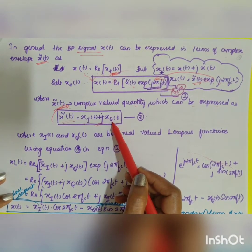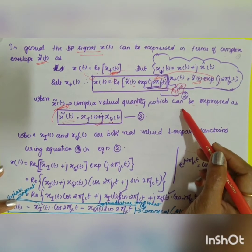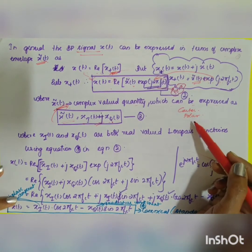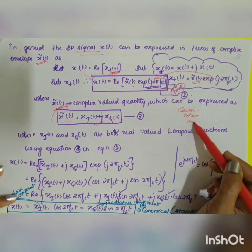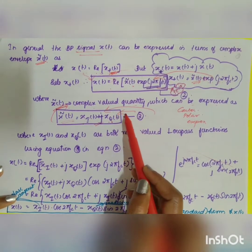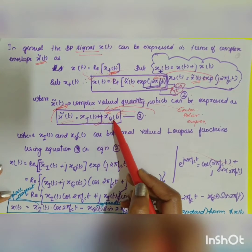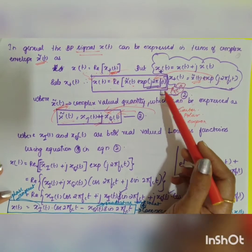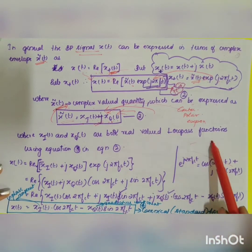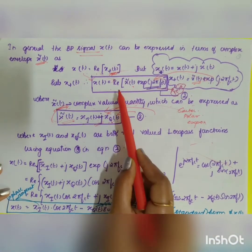There are three forms for expressing x̃(t): Cartesian/rectangular form, polar form, and exponential form. In rectangular form: x̃(t) = xI(t) + j·xQ(t). This is equation three, where xI(t) and xQ(t) are both real-valued low-pass functions — the in-phase and quadrature components respectively.